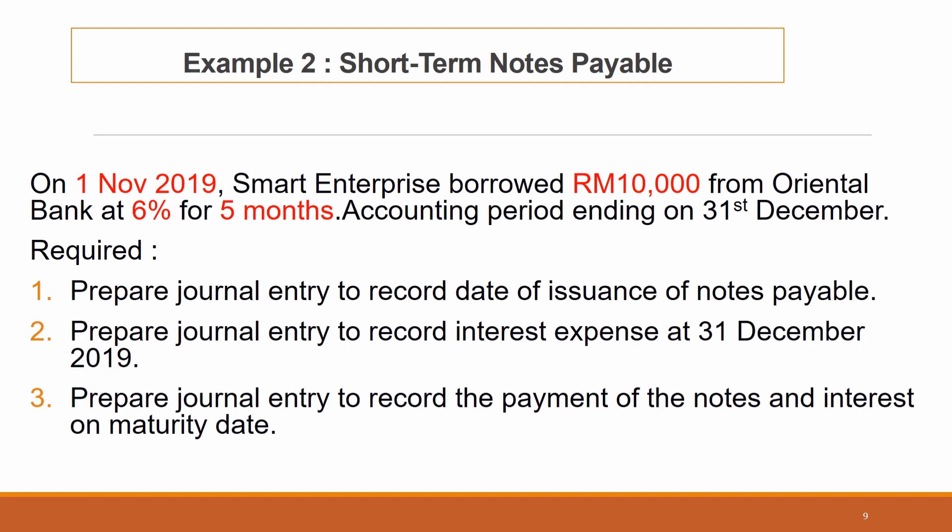Example two, short-term notes payable. On 1st November 2019, Smart Enterprise borrowed RM10,000 from Oriental Bank at 6% for 5 months. The accounting period ends on 31st December. You are required: first, to prepare the journal entry to record the date of issuance of notes payable; second, to record interest expense at 31st December 2019; and third, to record the payment of the notes and interest on the maturity date.